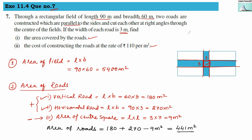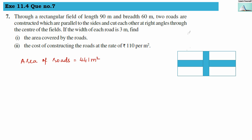So the area of the roads is 441 meter square. Now for the second question: cost of constructing the roads at the rate of ₹110 per meter square. The rate is ₹110 per meter square and we have 441 meter square.